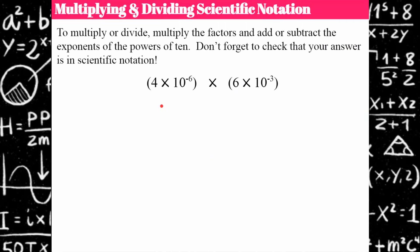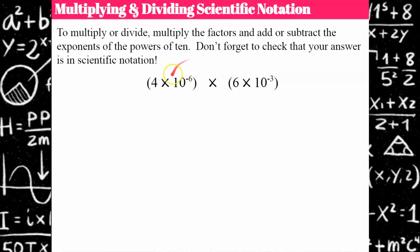Let's go over multiplying and dividing scientific notation. Students always have an easier time with this because it doesn't matter what the powers of 10 are — the rules are different. To multiply or divide, you multiply the factors and add or subtract the exponents depending on the operation. If you're multiplying, you multiply the factors and add the exponents. If you're dividing, you divide the factors and subtract the exponents.